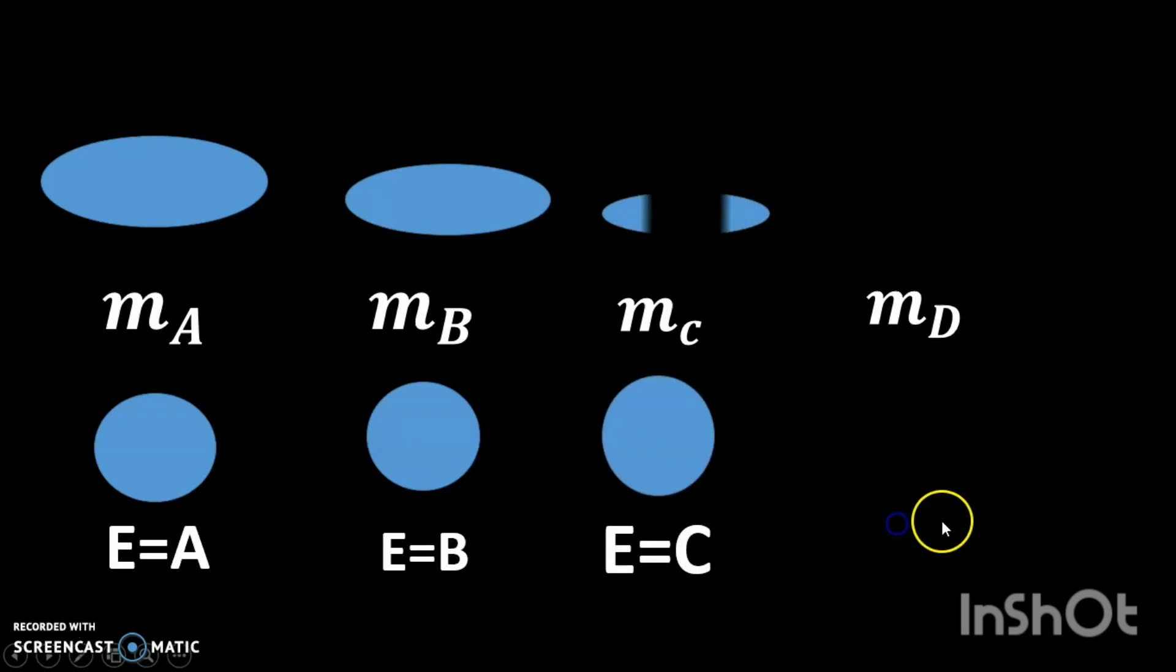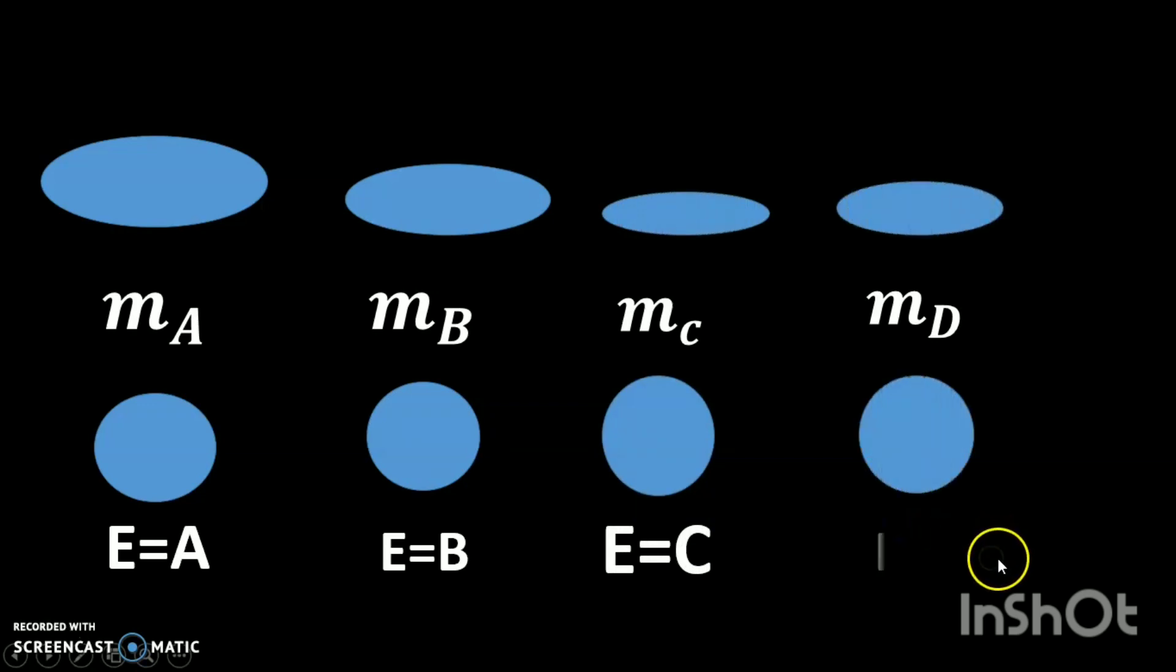So we have a mathematical object m for every possible outcome we could get for our particle. Somehow our particle is represented by an amalgamation of all these mathematical objects, holding on to each outcome until we make a measurement.